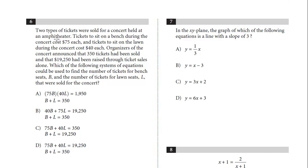Two types of tickets were sold for a concert held at an amphitheater. Tickets to sit on a bench during the concert cost $75 each, and tickets to sit on the lawn during the concert cost $40 each. Organizers of the concert announced that 350 tickets had been sold and that $19,250 had been raised through ticket sales alone. Which of the following systems of equations can be used to find the number of tickets for bench seats B and the number of tickets for lawn seats L that were sold for the concert? Very common question, systems of equations. We don't have to solve it, we just have to set it up.